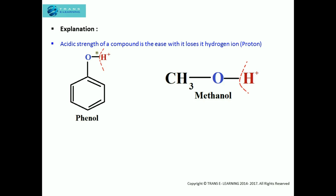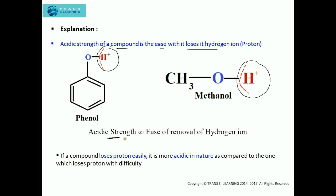First of all, we should understand what is meant by acidic strength. The acidic strength of a compound is the ease with which it loses its proton, or hydrogen ion. Phenol has a tendency to lose this proton, whereas methanol also has a tendency to lose this proton. The acidic strength depends upon the ease of removal of hydrogen ion, and it is directly proportional to it. That means, if a compound loses a proton easily, it is more acidic in nature as compared to one which loses the proton with difficulty. So, as phenol is more acidic compared to methanol, phenol has a tendency to lose its proton more easily.